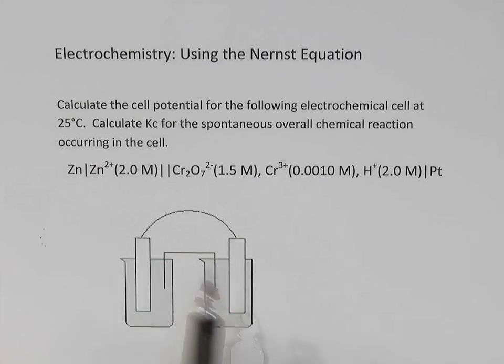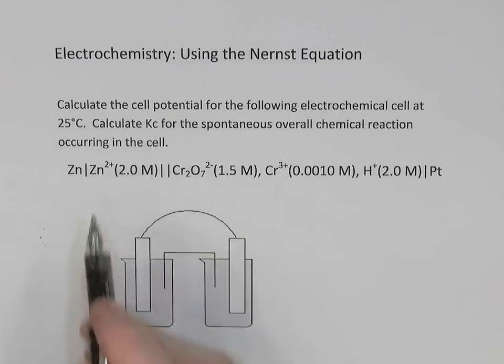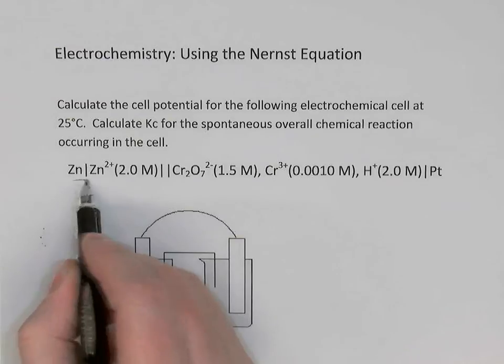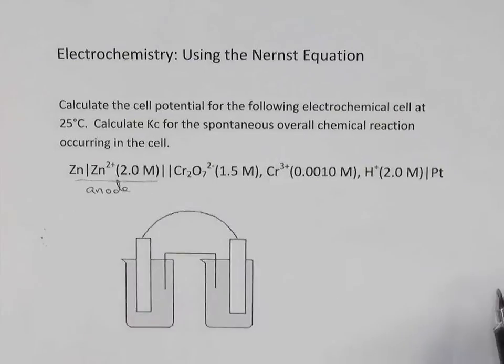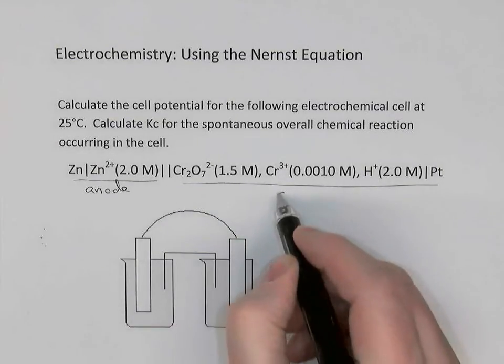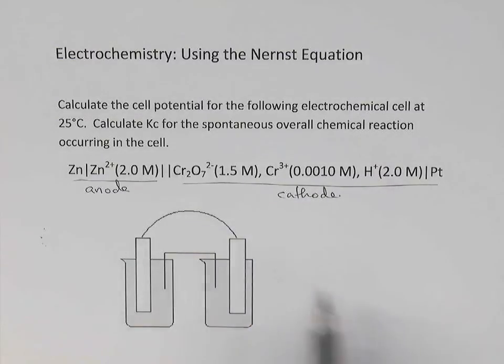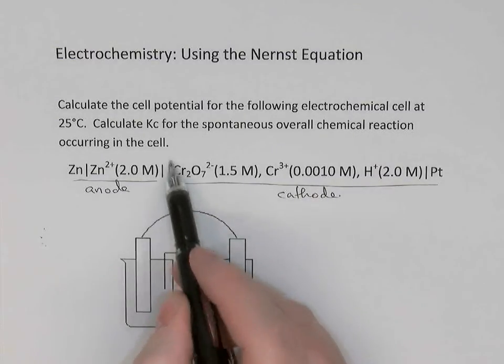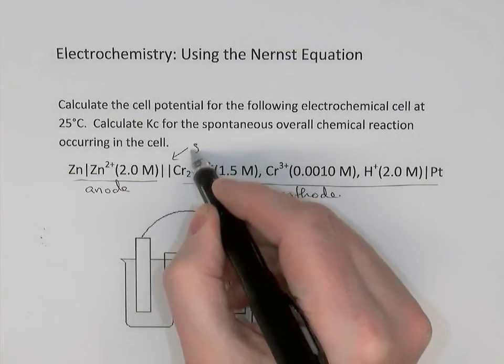So we've got a cell here described using line notation. We know that in line notation the first part of the description is the anode, this is where oxidation occurs. And the second part of the description is the cathode where reduction occurs. We know that those are separated in line notation by this double vertical line which represents the salt bridge.